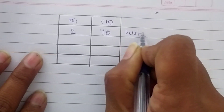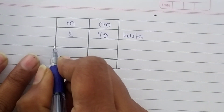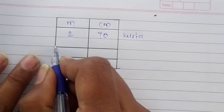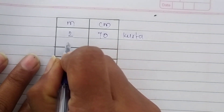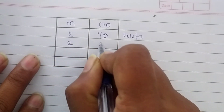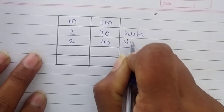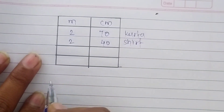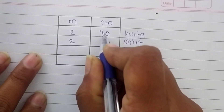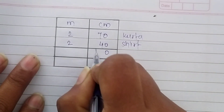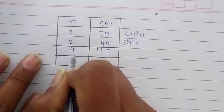For the shirt she bought 2m 40cm. We write 2 in the meter column and 40 in the centimeter column and write 'shirt' beside it. Now let's add: 70 plus 40 — 7 plus 4 is 11, and 2 plus 2 is 4.